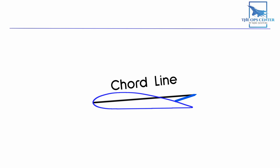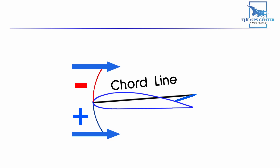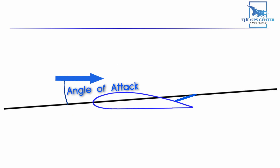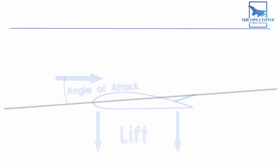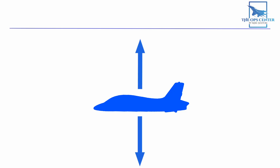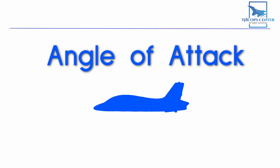Conversely, back stick pressure brings the elevators upward. Now we have a unique situation where the downward-pointing cord line creates a negative angle of attack — really a positive angle of attack pointing downward. So we have lift generated, but in the opposite direction, which brings the tail down and the nose upward. Forward and back on the stick shouldn't be thought of as up and down for an aircraft; it's actually a control for angle of attack.